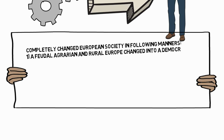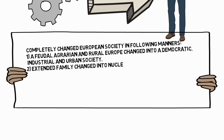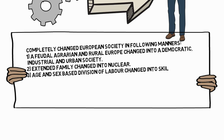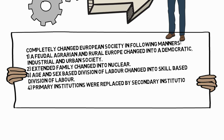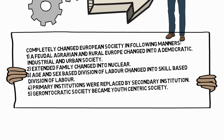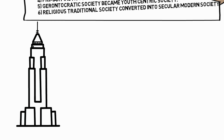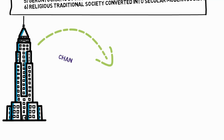Second, the extended family changed into the nuclear family. Third, age and sex-based division of labor changed into skill-based division of labor. Fourth, primary institutions were replaced by secondary institutions. Fifth, the gerontocratic society became a youth-centric society. Sixth, the religion-traditional society converted into a secular modern society. These changes were so drastic and structural that is why it was called a revolution.